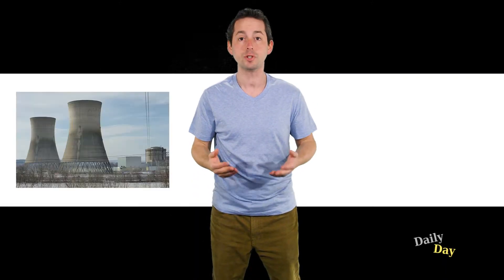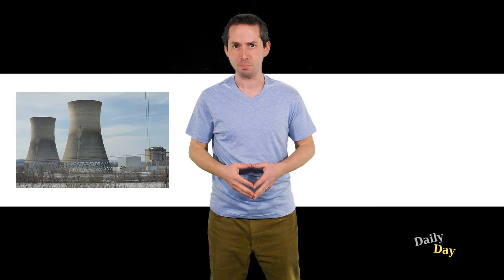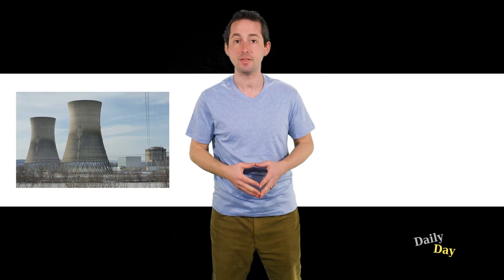This is March 28th. Today in 1979, the worst nuclear power incident in US history occurs at Three Mile Island in Pennsylvania, when a pressure valve malfunctioned and the core came dangerously close to meltdown.